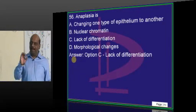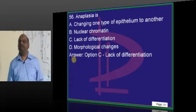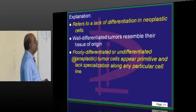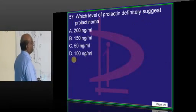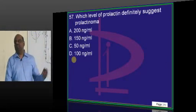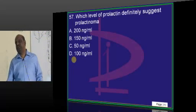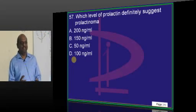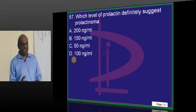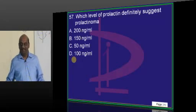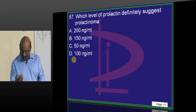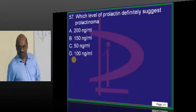Anaplasia is a de-differentiated cell, as all of you know — the basic definition. This is another guess question. If you did not do it, no regrets. Go ahead and think. You are not even expected to answer it.